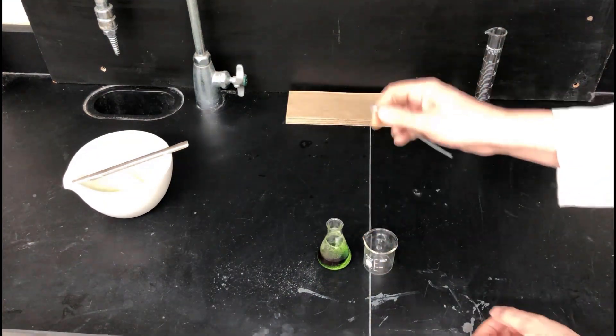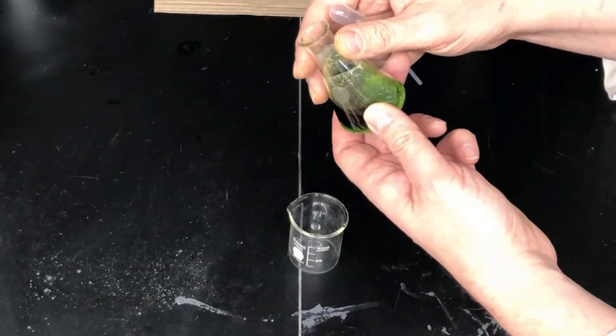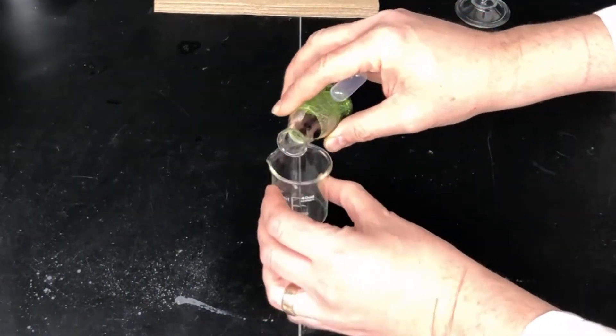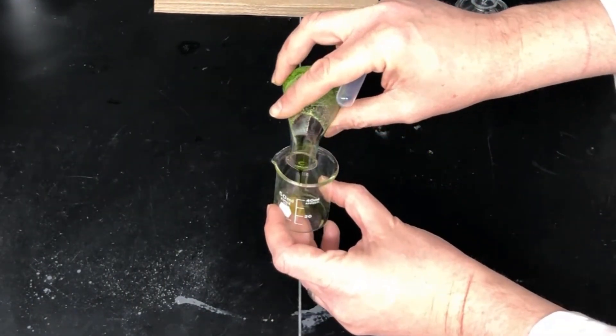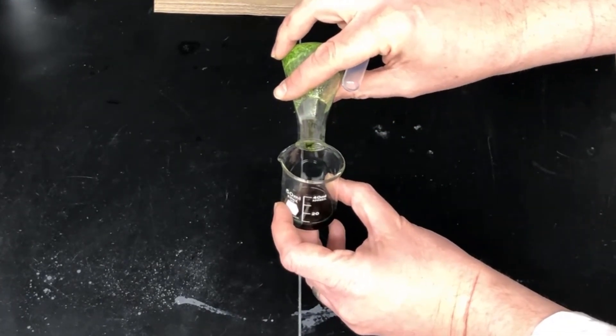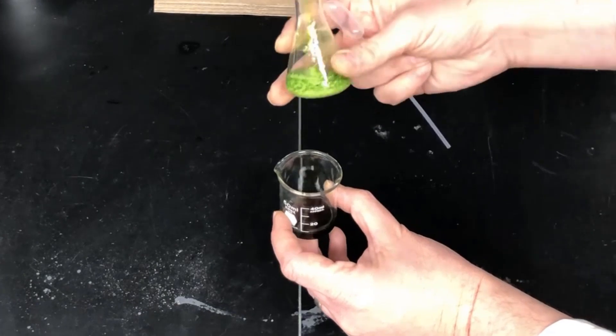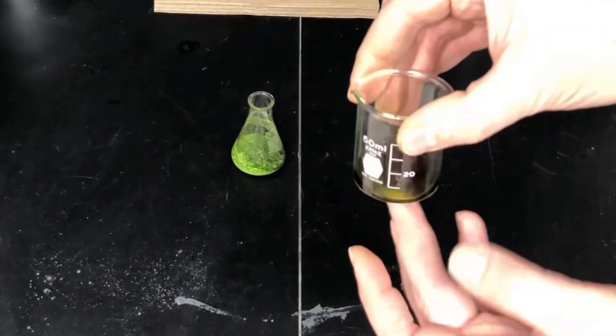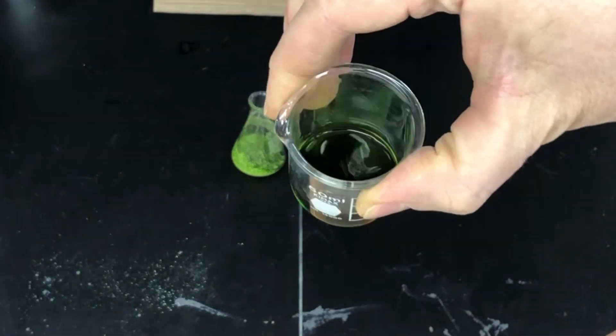So the next thing we're going to do then is decant off that dark green solution to get it by itself and leave the solid stuff behind. So there's the decanting process. It's just pouring carefully such that you leave the solid material behind. So there we go. That's the pigment solution that we're after.